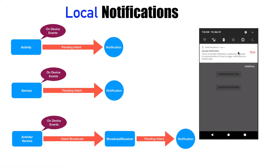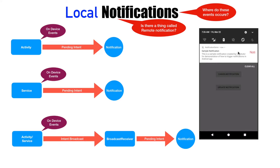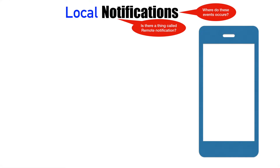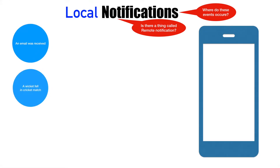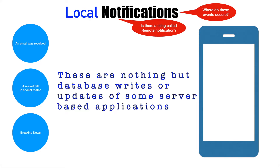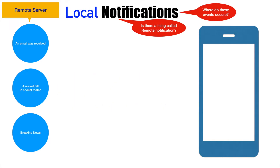This begs the question: is there a thing called a remote notification, and if there is, where are these events occurring? To understand that, let's think of a few scenarios — like an email being received, a wicket falling in a cricket match, and a breaking news event happening. We are talking from the point of view of where do these events occur. Literally they occur in the real world, but from the software engineering point of view, these are nothing but some kind of entries in a database of a remote server. We can surely say that these events are happening on a remote server.